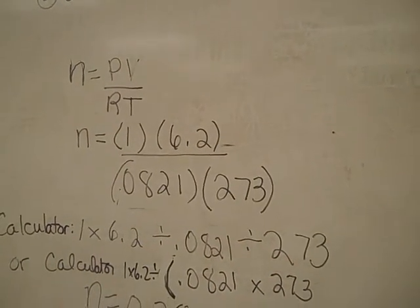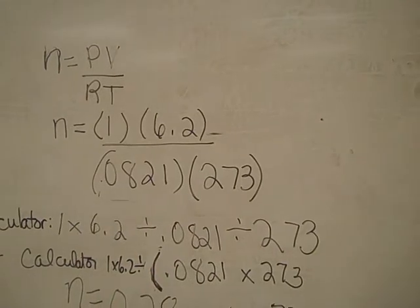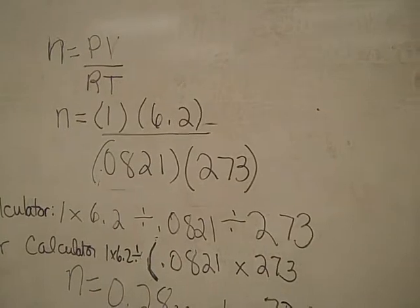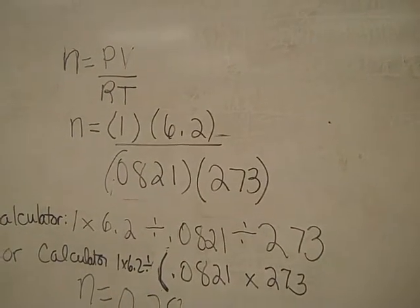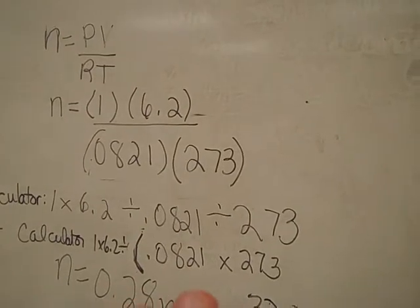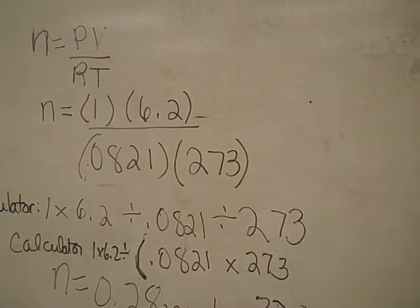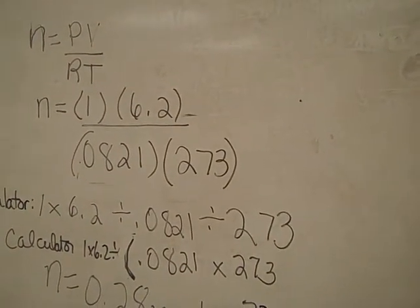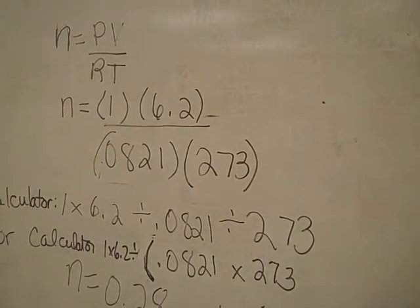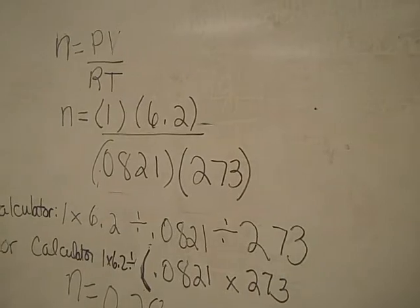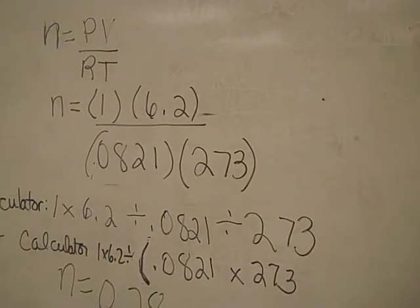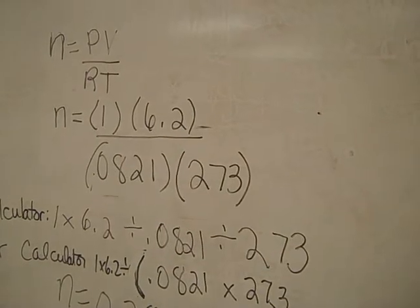If you insist on doing these guys multiplied together, you could do 1 times 6.2, and then when you divide, make sure you use the parentheses symbol. Otherwise it's going to divide by 0.0821, take that answer, and multiply by 273. And we don't want that. That's a crazy number of moles. You should always have a few number of moles unless you're talking about a gas under pressure, like a scuba diving tank.